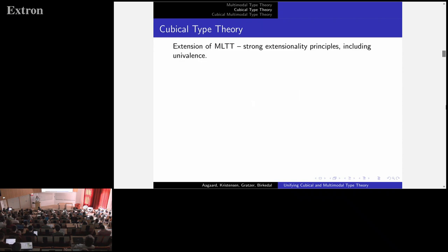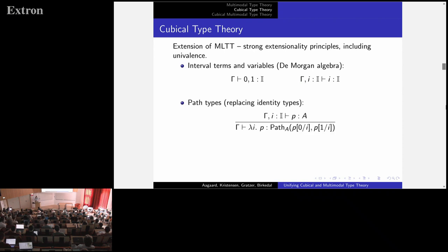Cubical type theory, an extension of Martin-Löf type theory in a different direction. It adds some strong extensionality principles, including univalence. Really, what we add to it, in cubical type theory, we have interval terms and variables. So the interval we think of as the interval, endpoints 0 and 1 and other things, we can make variables of them. And using this, we define path types. These replace identity types. A path between two points is really just a function from the interval into the type that matches on the endpoints.